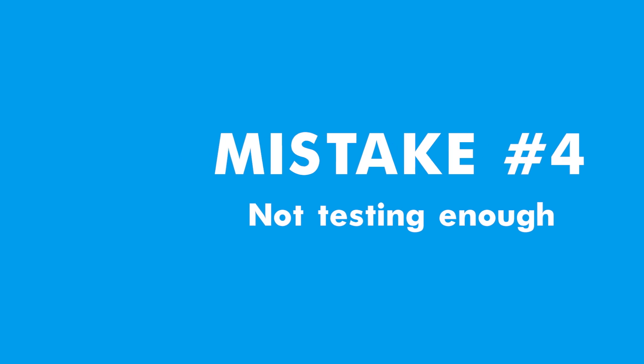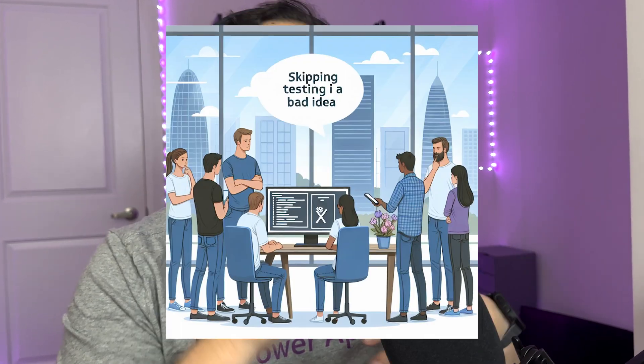Mistake number four: not testing thoroughly. Skipping the testing phase can lead to bugs and issues that could have been easily fixed. Test your app on different devices and with different user scenarios, and get feedback from actual users to catch problems early. Also consider using tools like the Power Apps Test Studio for automated testing — it can help you identify issues and ensure your app works as expected.